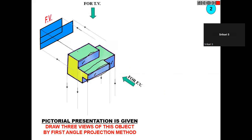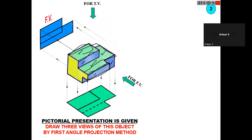For the top view, you can observe the entire green color — the complete L-shape. You can draw directly one complete L-shape with a rectangle inside. Both portions are at a single plane.